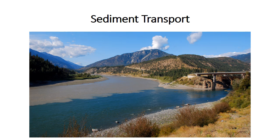Rivers are characterized by fairly steady, unidirectional water flow, and that process is responsible for sediment transport and for the generation of predictable features called bed forms. The present is often said to be the key to the past, so in this lecture we'll consider how sediment is transported in modern rivers. In upcoming lectures we'll look at the types of sedimentary structures and then use them to infer the processes that were operating in ancient depositional environments.